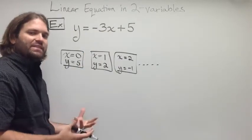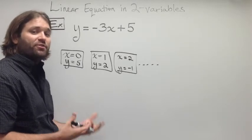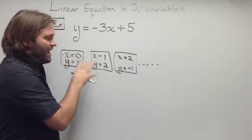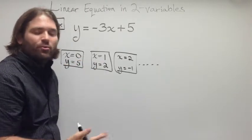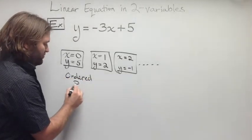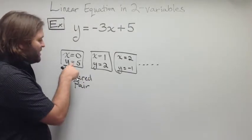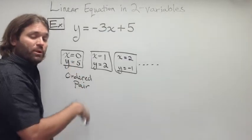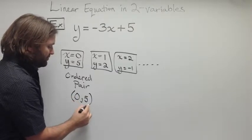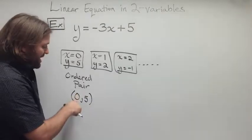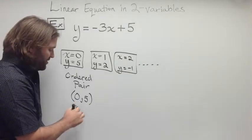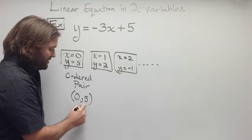To make these numbers easier to see, or easier to use, instead of having to write x is equal to 0 and y is equal to something every time, we use what's called an ordered pair. So, this solution, x is equal to 0 and y is equal to 5, we would represent as the ordered pair 0, 5.